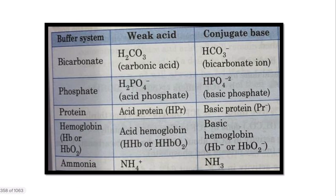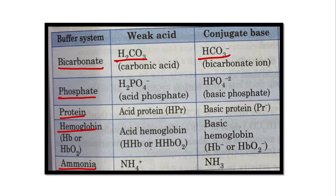Let's see the important buffer systems in our body. First, we have the bicarbonate buffer, which is the most important buffer in the blood. Then the phosphate buffer, protein buffer, hemoglobin buffer, and ammonia buffer — five important types of buffer present in our body. In the bicarbonate buffer, carbonic acid is the weak acid and bicarbonate ion is the conjugate base. In the phosphate buffer, acid phosphate is the weak acid. Proteins such as albumin, globulin, and others form different types of protein buffers.